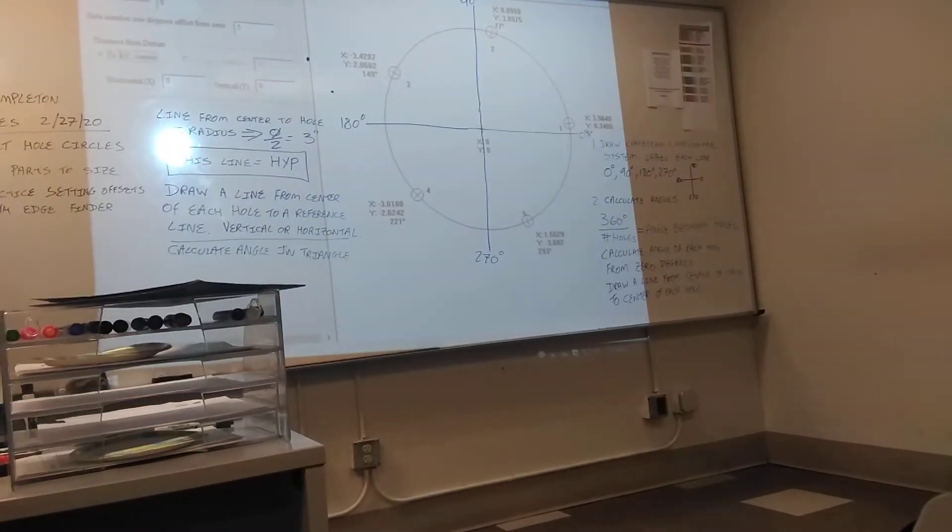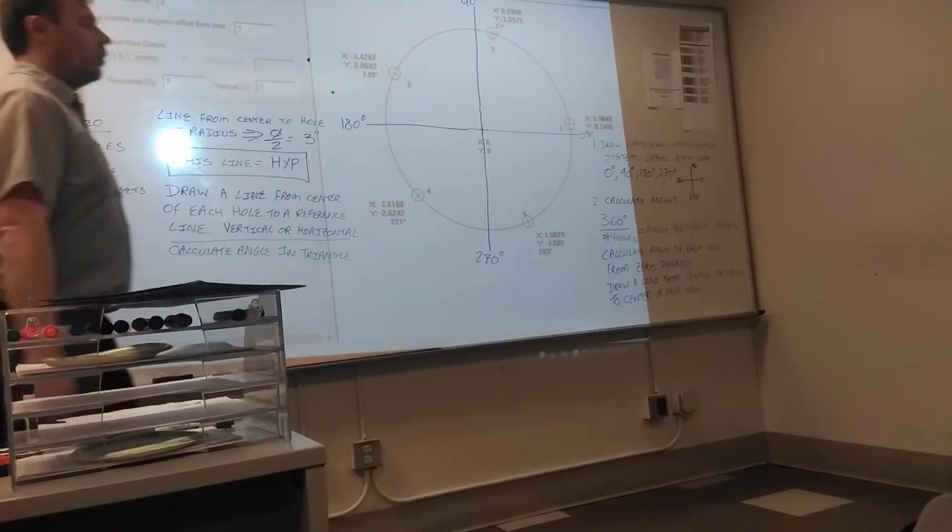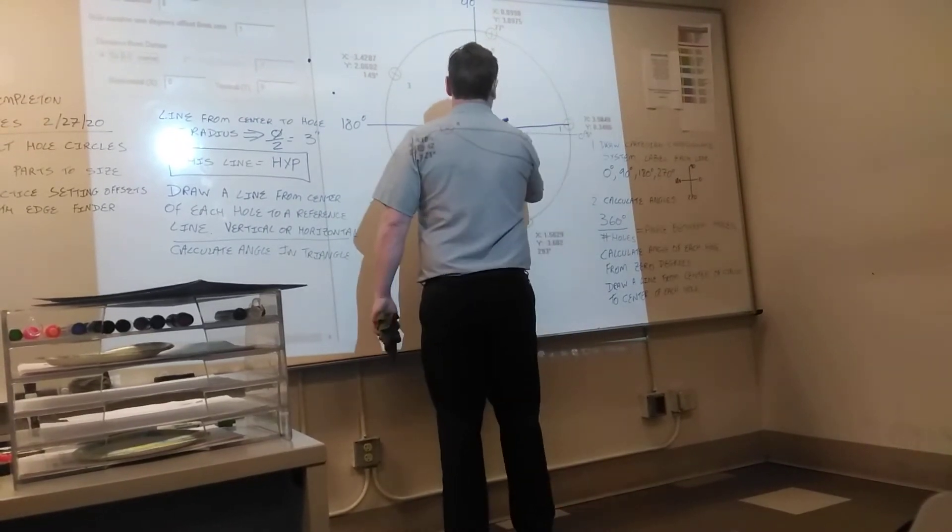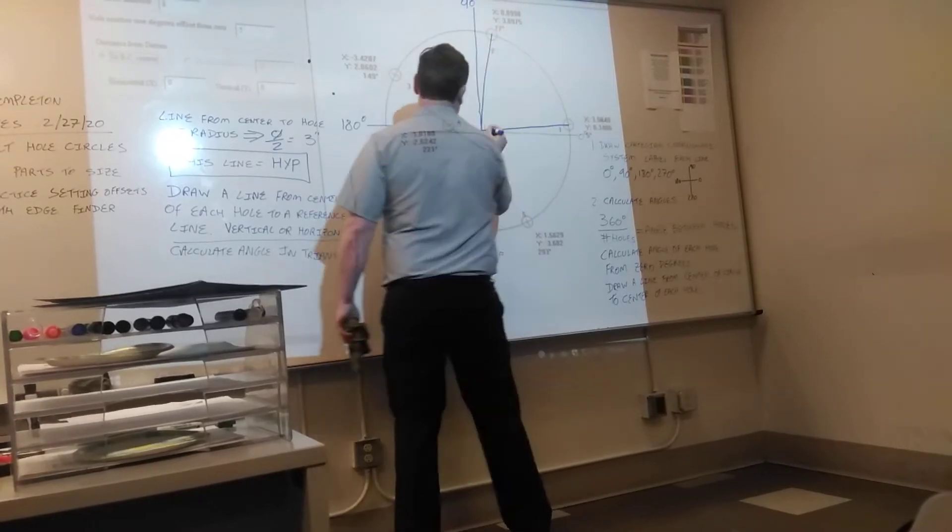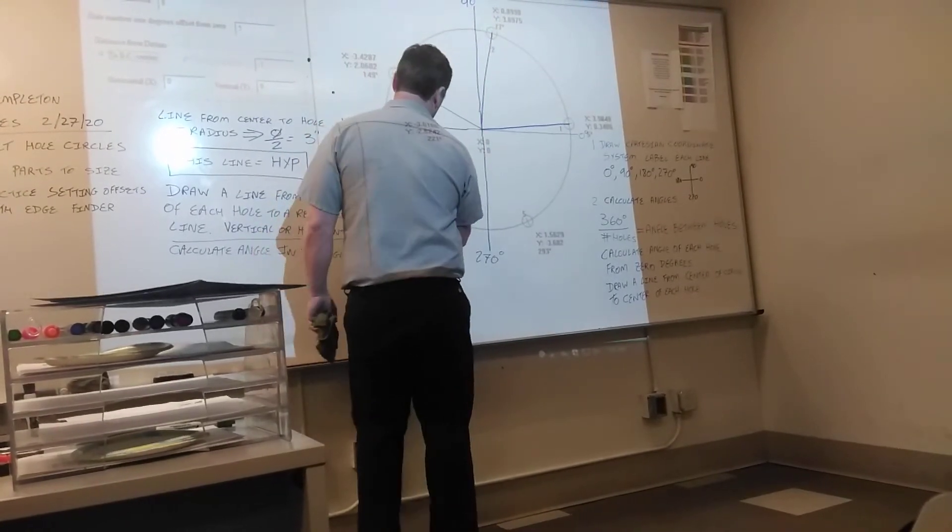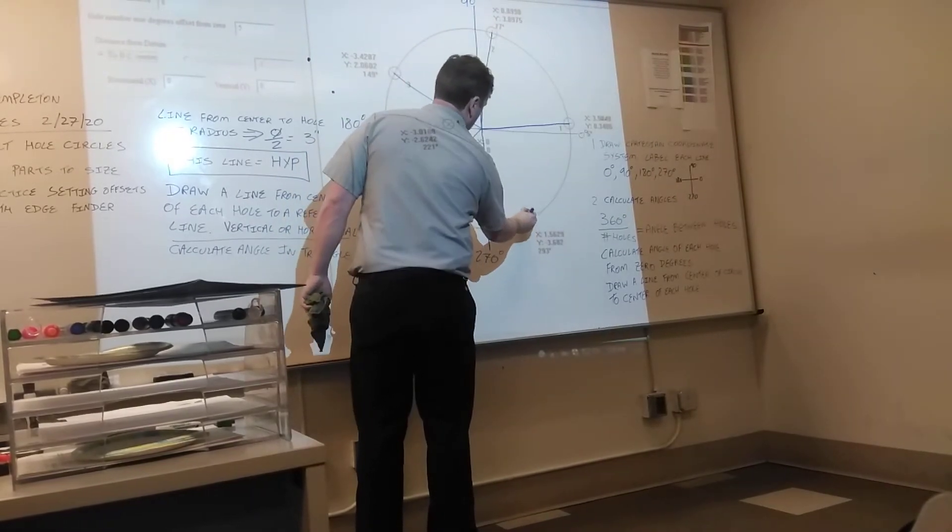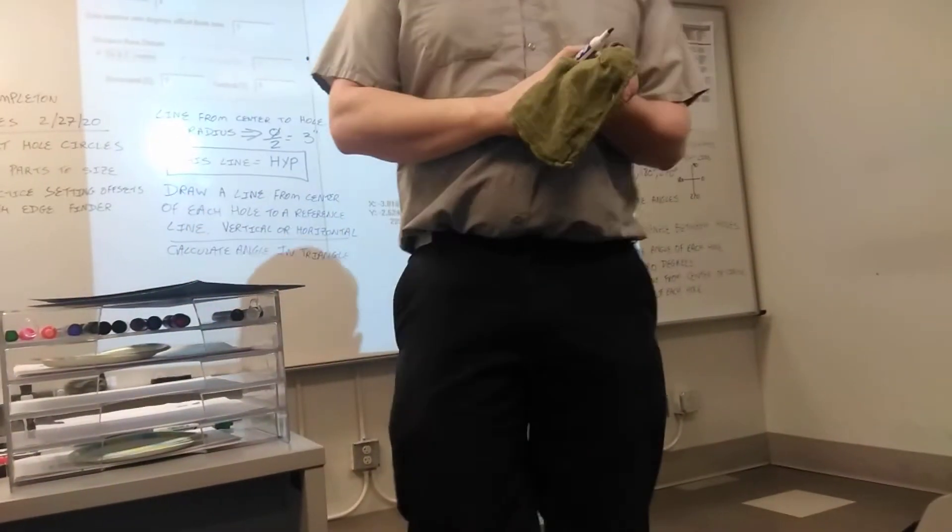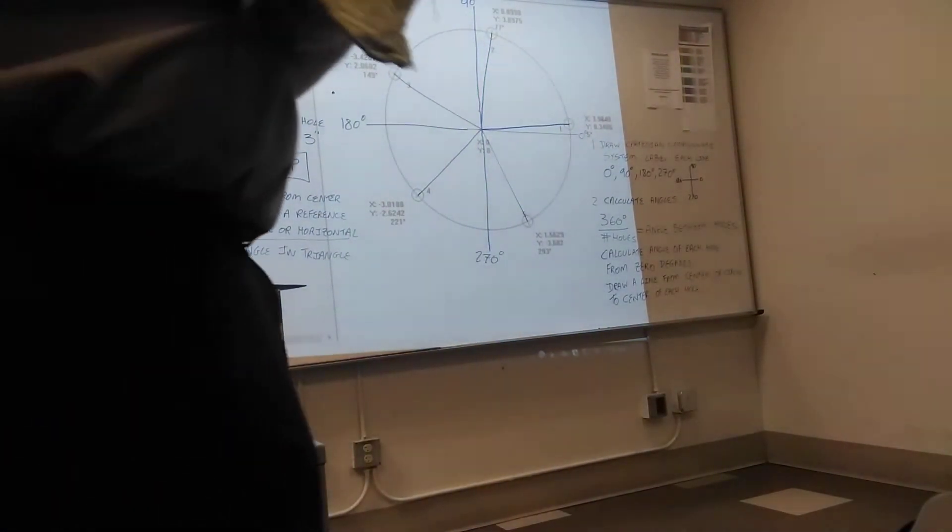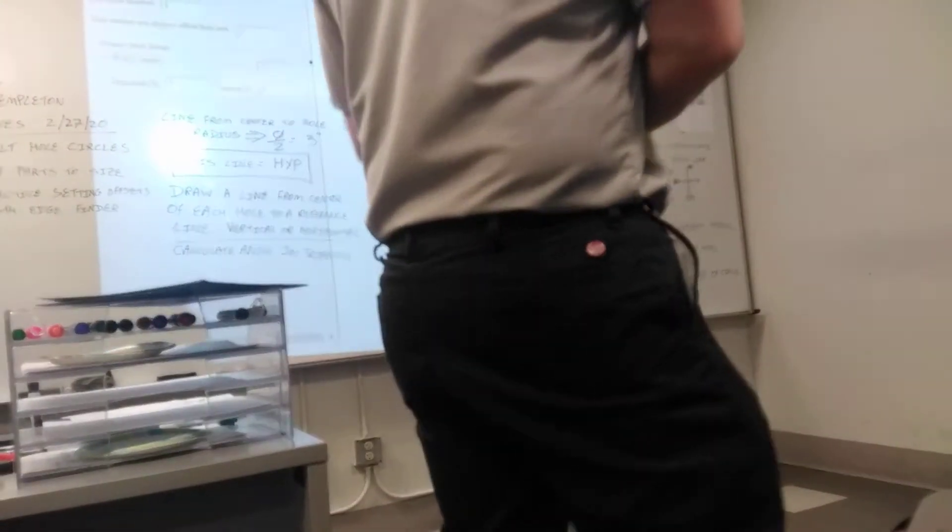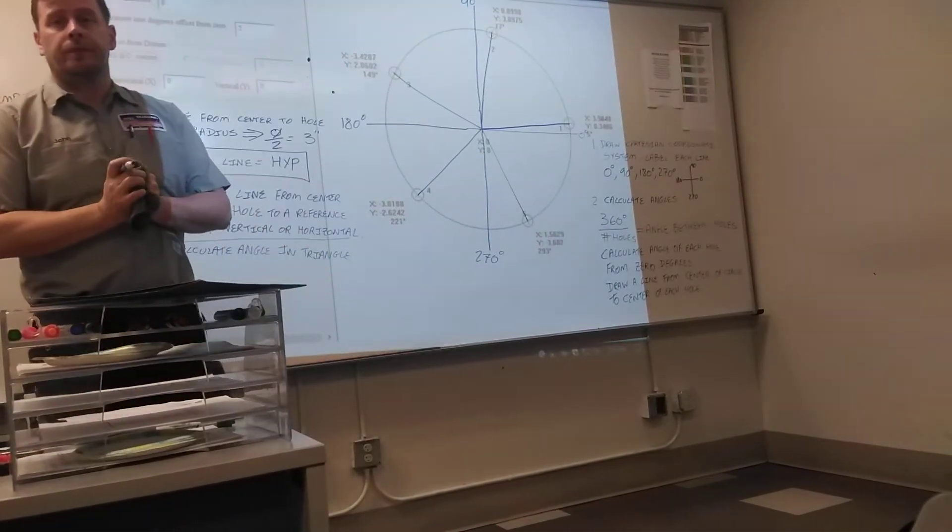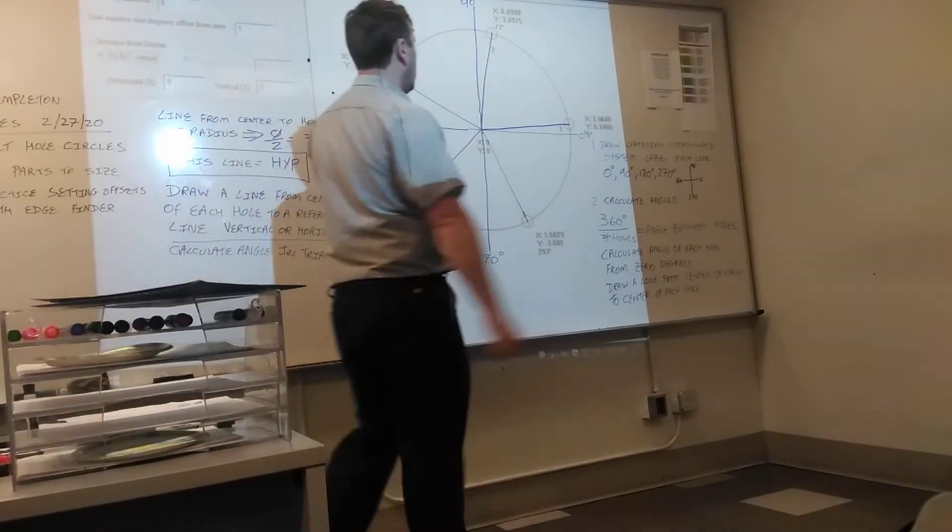So draw your reference lines. Draw a line from the center to the center of each hole. What do we know about that line? It's a radius from the center of the circle to the edge. So what is the diameter? The radius is going to be four.